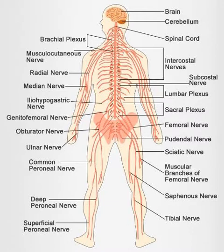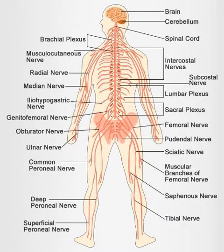The PNS is divided into three separate subsystems: the somatic, autonomic, and enteric nervous systems. Somatic nerves mediate voluntary movement. The autonomic nervous system is further subdivided into the sympathetic and the parasympathetic nervous systems. The sympathetic nervous system is activated in cases of emergencies to mobilize energy, while the parasympathetic nervous system is activated when organisms are in a relaxed state. The enteric nervous system functions to control the gastrointestinal system. Both autonomic and enteric nervous systems function involuntarily.